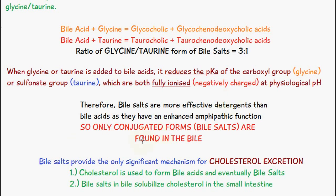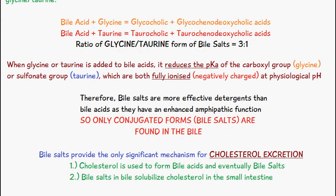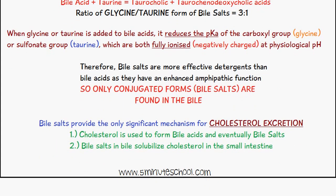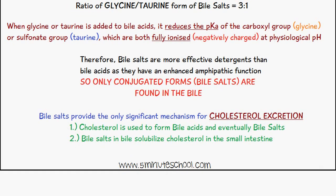It is mainly the conjugated forms of bile acids — bile salts — which are found in bile, not free bile acids. A final key point is that bile salts provide the only significant mechanism for cholesterol excretion. Cholesterol is used to form bile acids and eventually bile salts, and bile salts in bile solubilize cholesterol in the small intestine. These are the ways cholesterol can be excreted, and it is all due to bile salts.